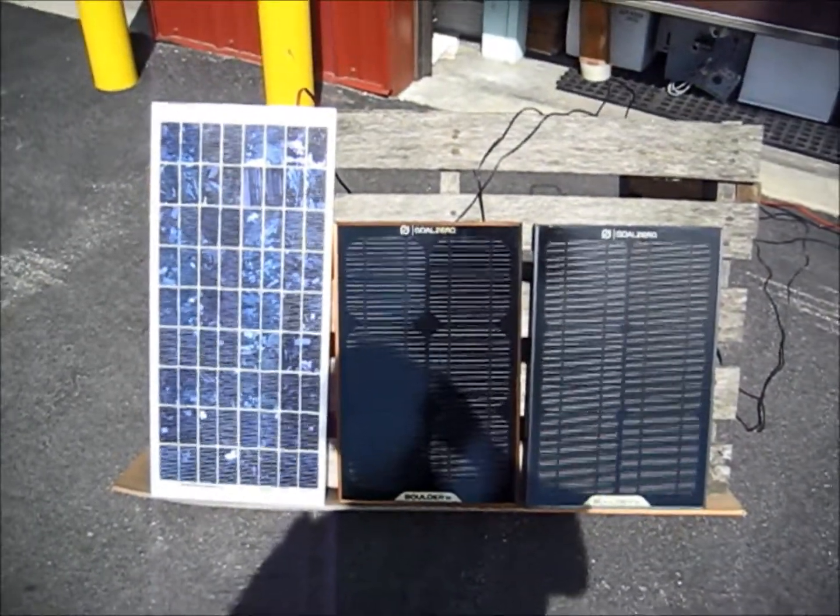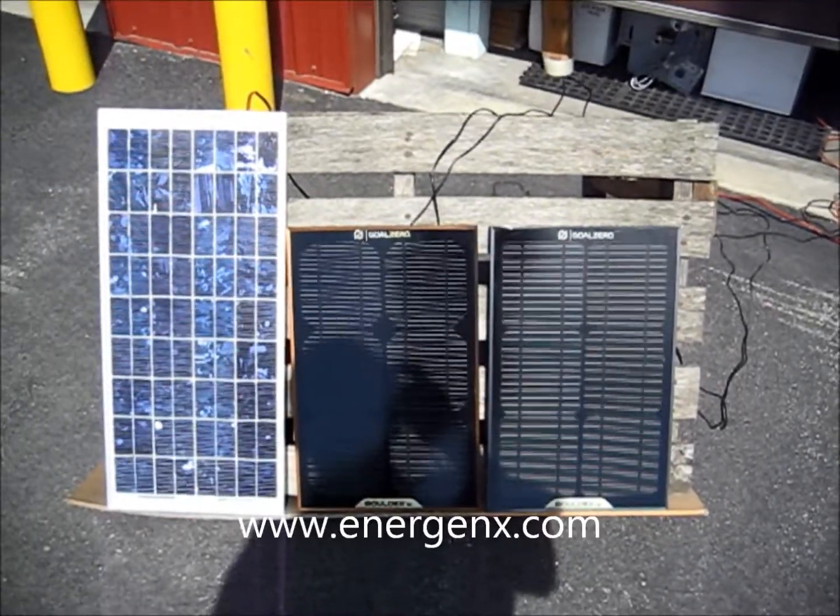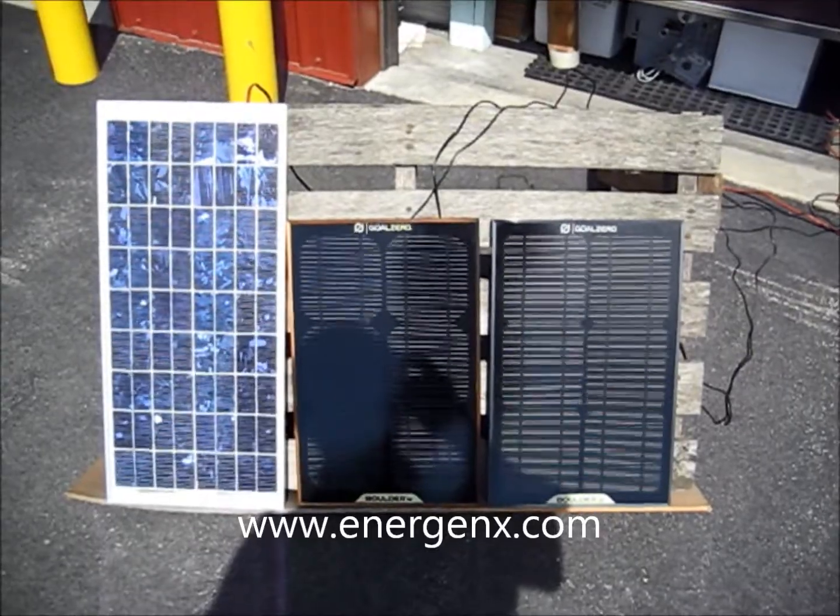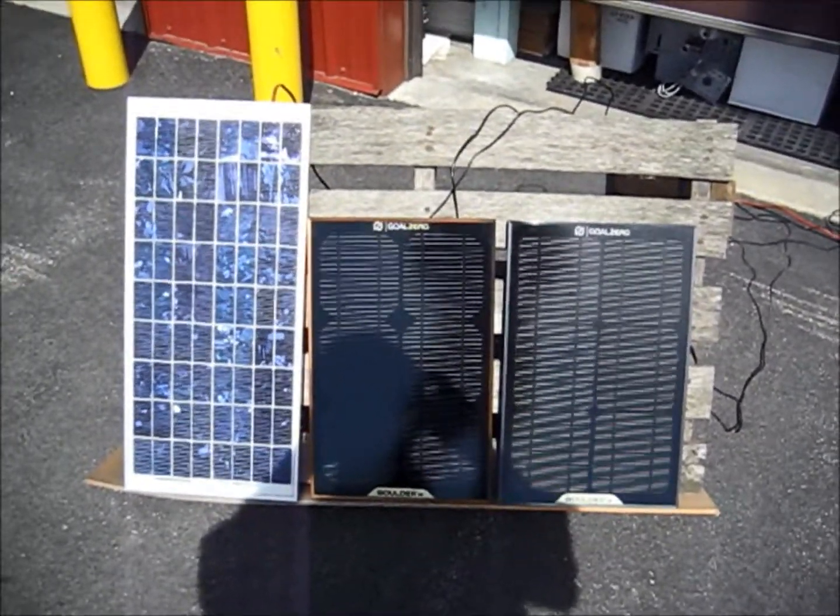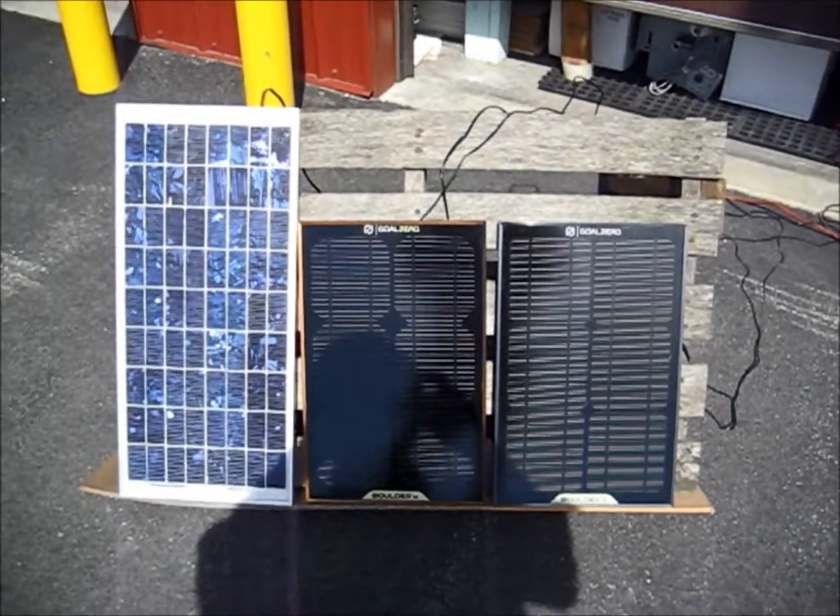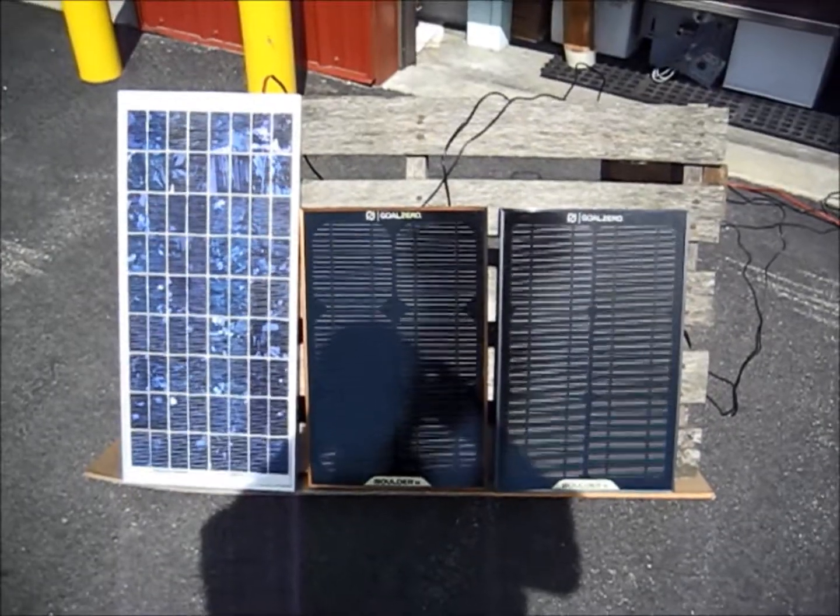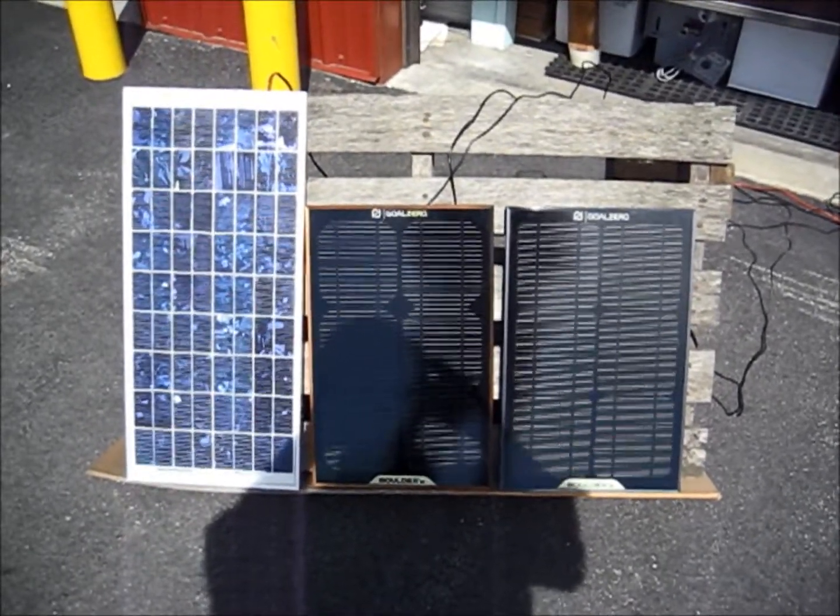So since we know that cloud cover and spray in the atmosphere is going to cut down on the efficiencies of the panels, that's why we're only seeing the current that's available there at the current meter. But let's go and change that meter around and look and see what the panels are trying to put in.